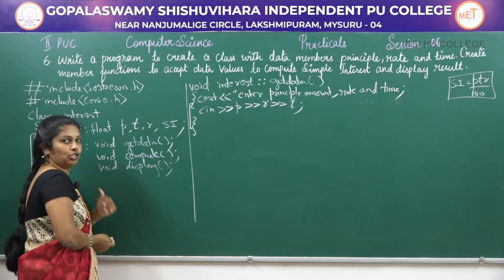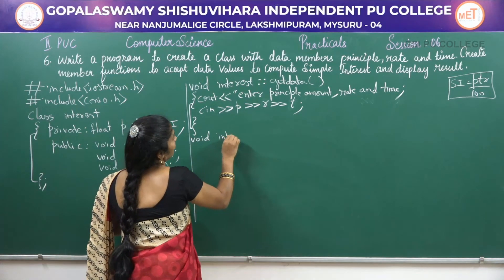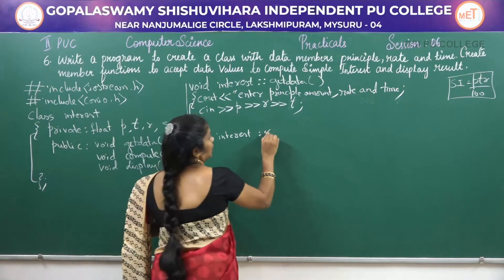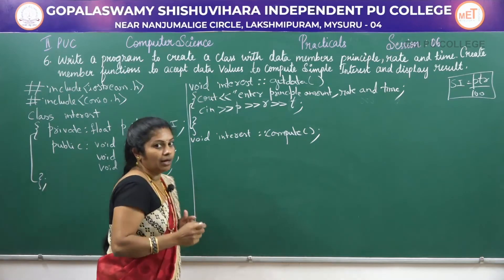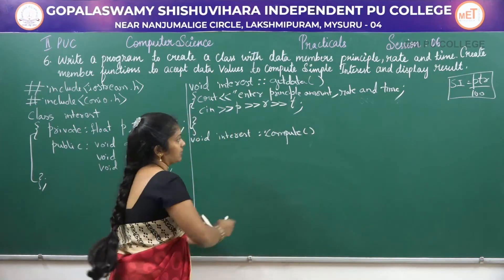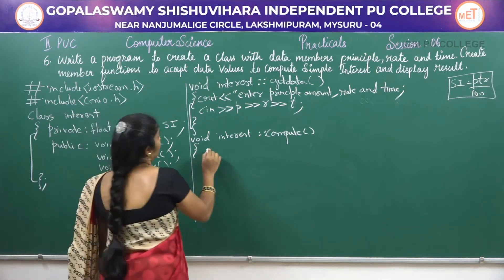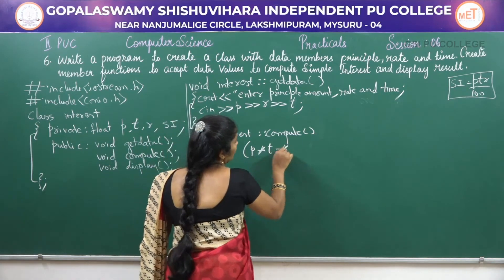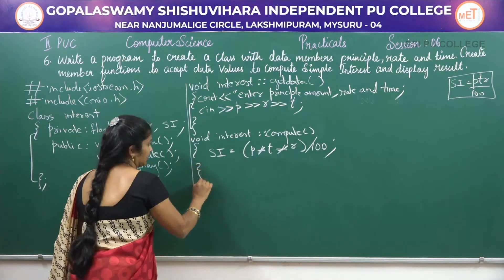Next, we will write the compute function. That is: void interest::compute(). On this compute function, we will write the statement: SI = P * T * R / 100. This is the calculation. While writing the function definition outside the class, do not put any semicolon after the function header.